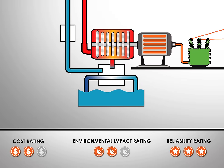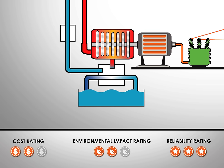A condenser converts the steam from the turbine back to water. That water is reused in the boiler.